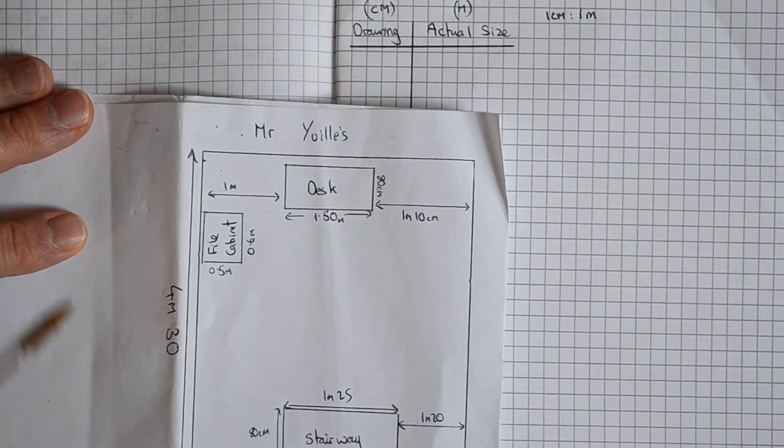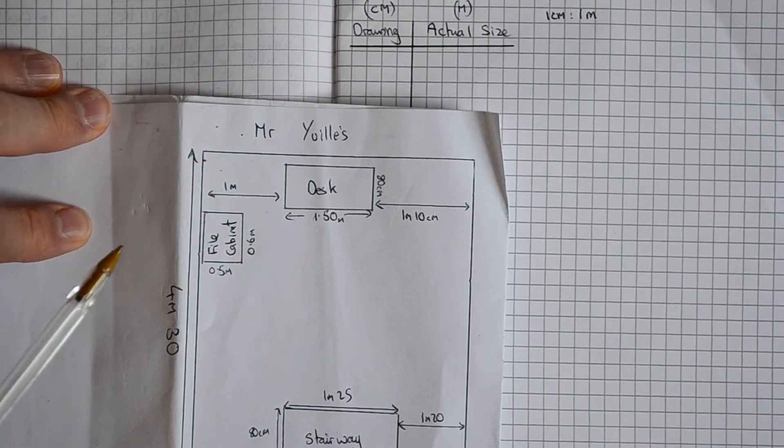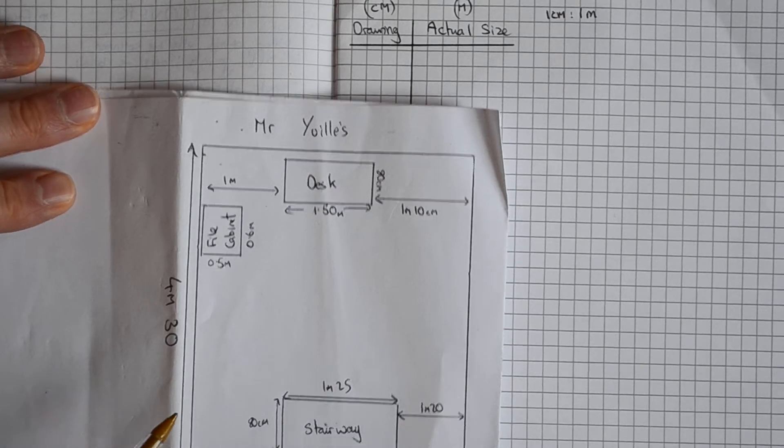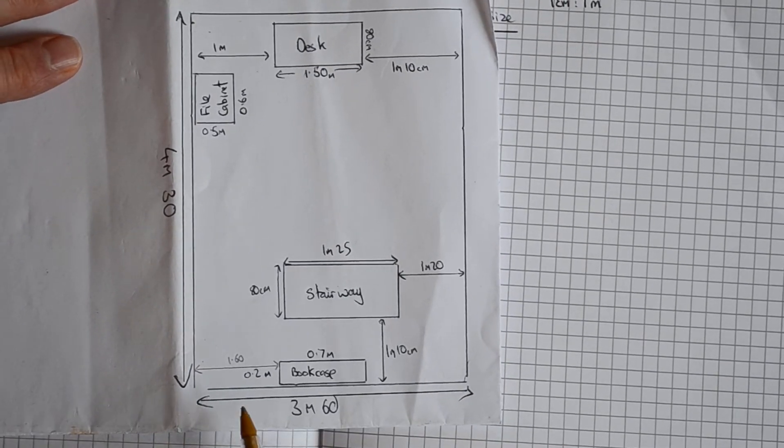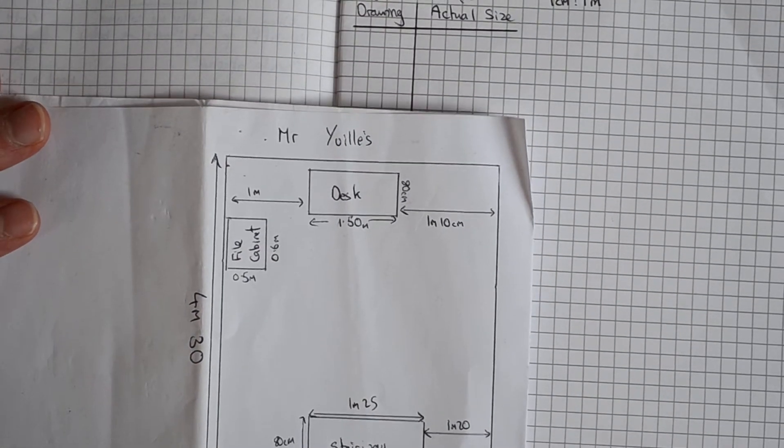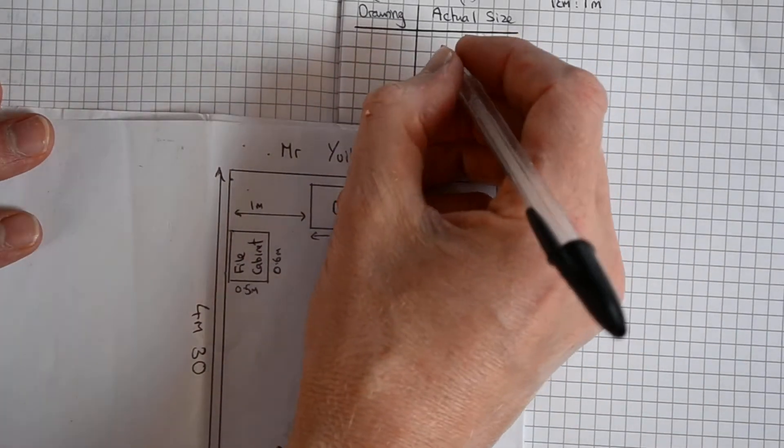So let's have a look at the actual dimensions. The dimensions of the workspace are 4 meters 30 long and then 3 meters 60 across, so I'm going to do those. We're going to make a start on this.